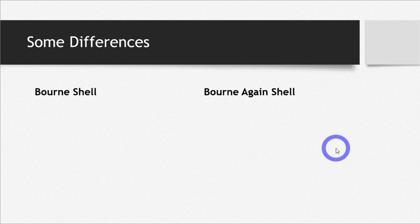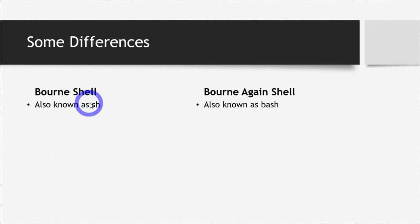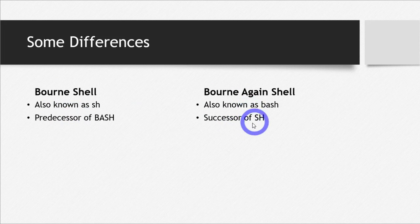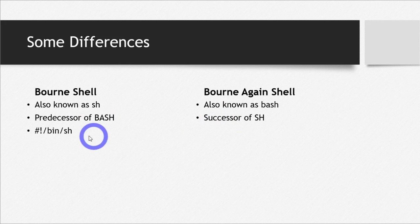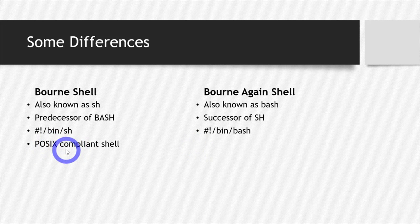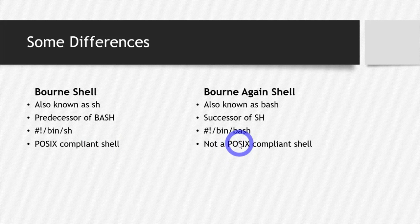Now let's see the differences between born shell and bash. The full form of bash is 'born again shell.' Born shell is also known as SH, and born again shell is also known as bash. Born shell is the predecessor of bash — meaning something which came first. Born again shell is the next version of born shell, making it the successor of SH. The shebang line for born again shell replaces SH with bash: /bin/bash. Born shell is POSIX compliant, meaning it complies with all the standards defined by POSIX, while born again shell is not a POSIX compliant shell — there are many features in bash not yet acceptable by POSIX.